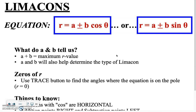Here are the limaçon equations. A couple of things to notice: you see the plus-or-minus symbol, but I just didn't want to write four equations instead of two. It's not going to be a plus-or-minus in the sense of applying both — it's either going to be an addition problem or an entirely different equation that is subtraction. What else is different about these limaçon equations compared to the rose curve equations we were working with?